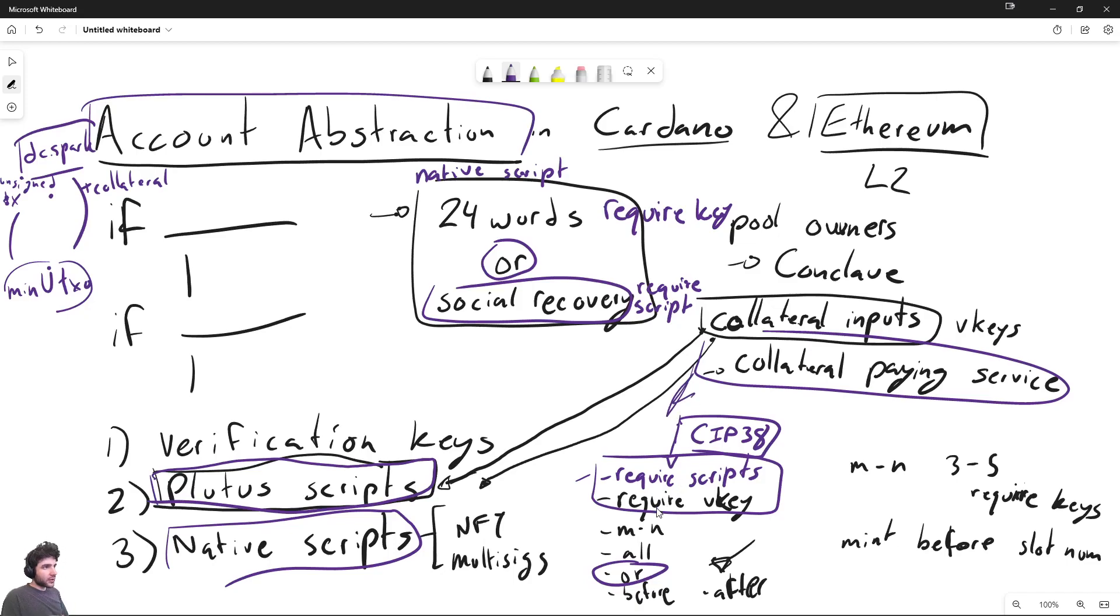So hopefully now you have a good idea of the roadmap on account abstraction for Cardano. There's some other work that could be done on this as future works. Obviously, Conclave is not quite done yet. It's not implemented in the Cardano main chain, so that can be some extra work.